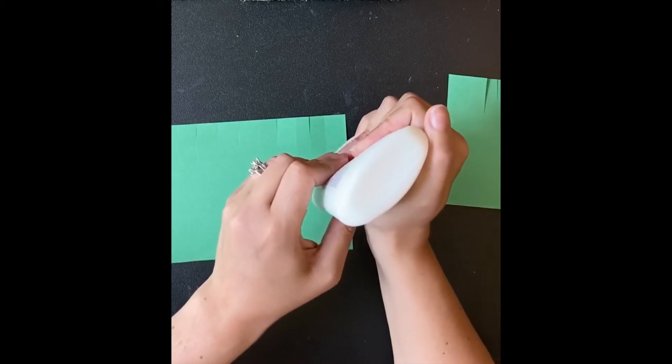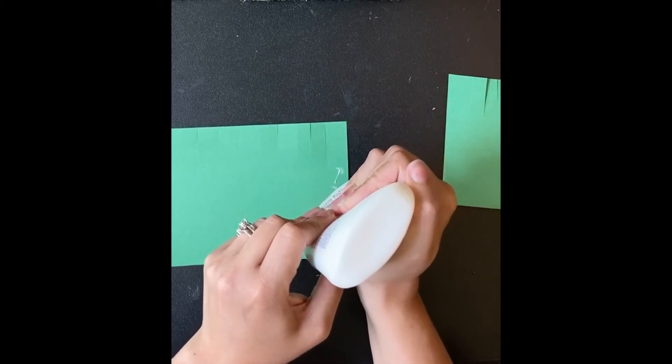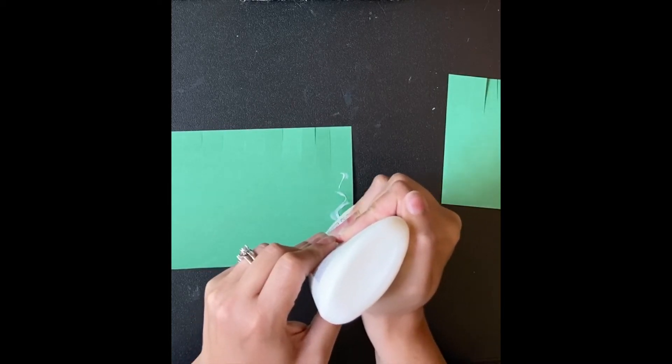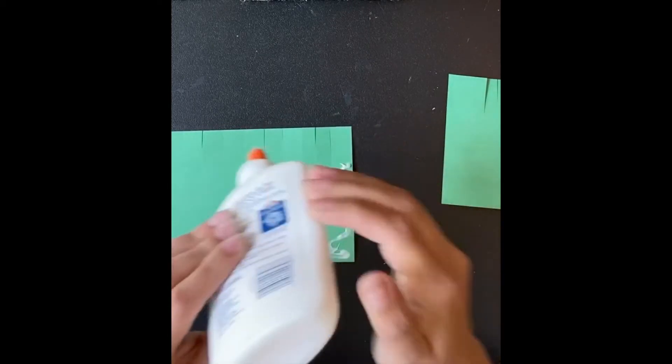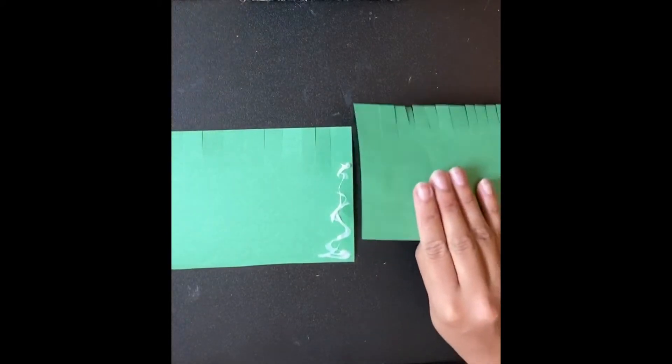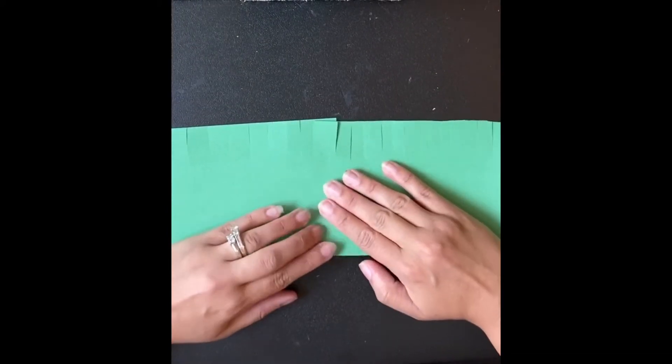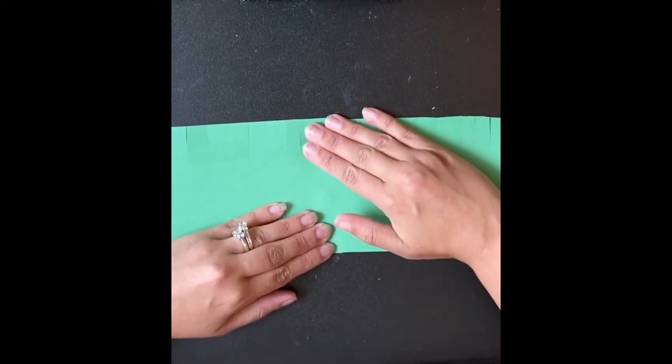Next you're going to take glue and you're going to glue your two pieces of paper together to make the crown. Remember when we're gluing we dot, dot but not a lot. And it's okay if we get glue on our fingers because we can wash our hands when we're done. So make sure you push down and connect your crown.